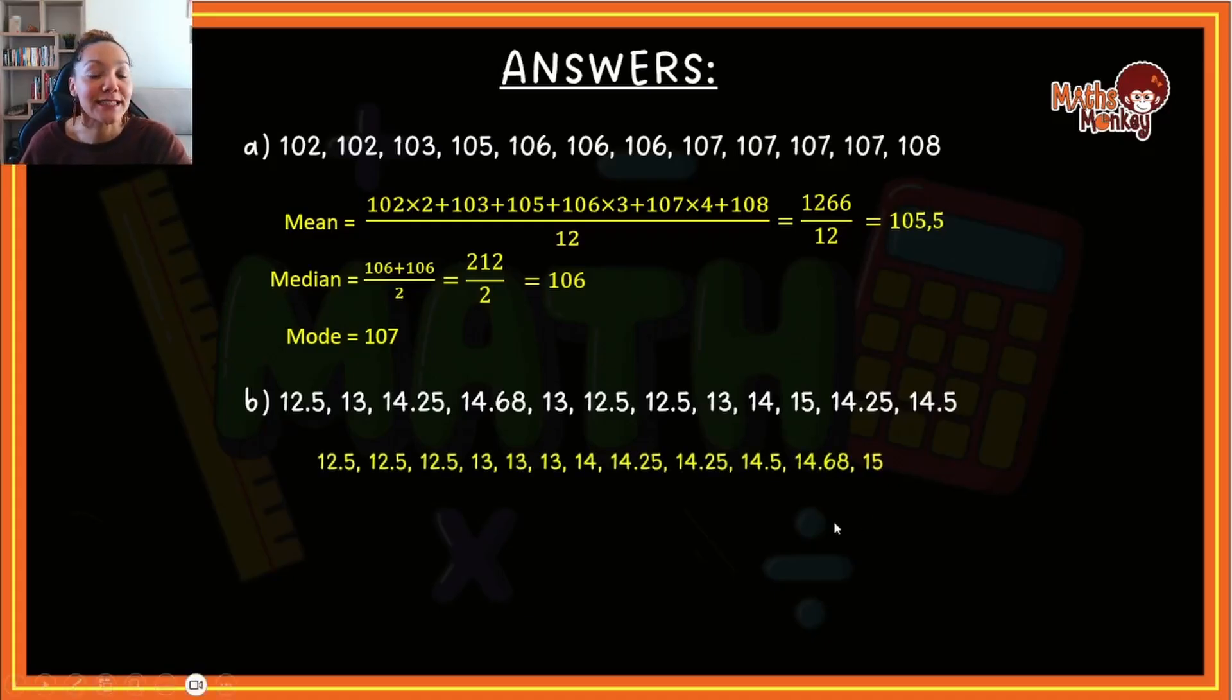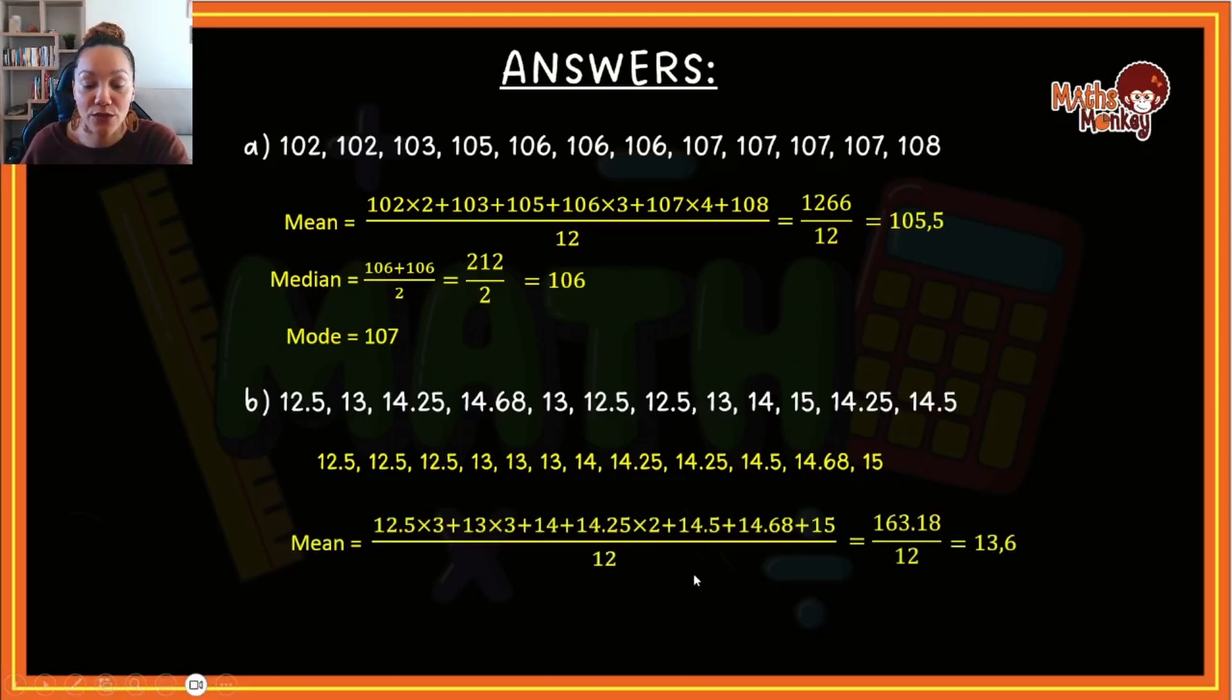Second data set - we had to arrange this in ascending order. It's important that you take a look at the decimal places especially, because they would have helped tell you which values are smaller and which are larger. Before we can calculate anything, we always put them in ascending order. The mean, if I add all these values together, will be 13.6. The median is the two middle values, in this case 13 and 14. Adding them together and dividing by two gives me 13.5. The value that appears the most - we have two values that appear three times: 12.5 as well as 13. For the mode you would list both of them down.